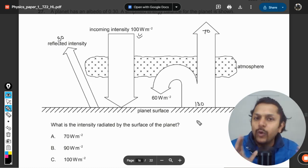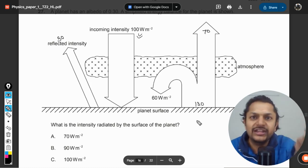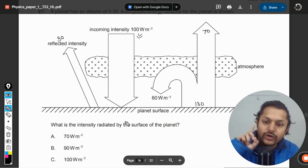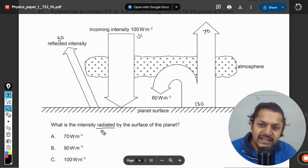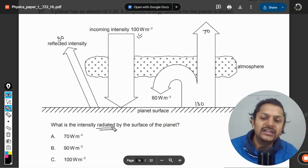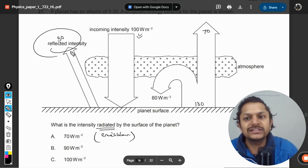Now one more point I would like to clarify here: whenever they say energy radiated, they are actually talking about only emission. They are not considering reflection in their calculation. This is emission.